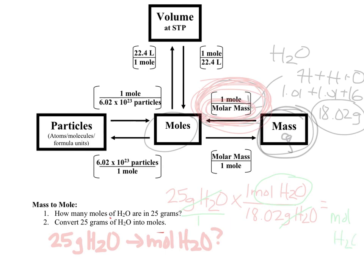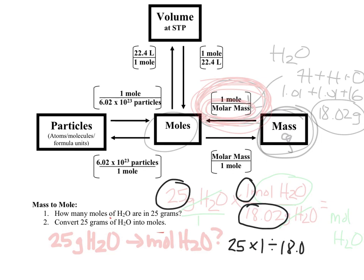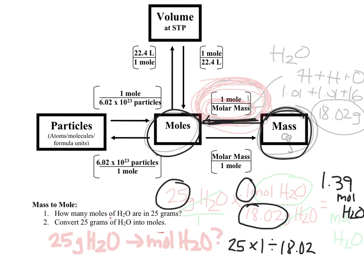Now just do the math: 25 times 1 divided by 18.02 equals 1.39 moles of H2O. It was simply a matter of knowing we started at Mass Island, going to Mole Island, using the top arrow and its conversion factor.